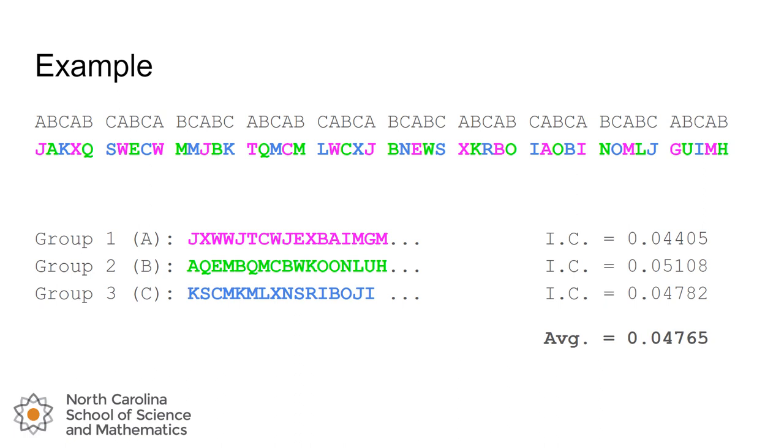And when we calculate the index of coincidence for each group, we see that those are even lower: 0.044, 0.051, and 0.048, with an average index of coincidence of 0.04765. That average index of coincidence is actually very close to what we would expect for a normal Vigenère cipher, so that's not what we want.